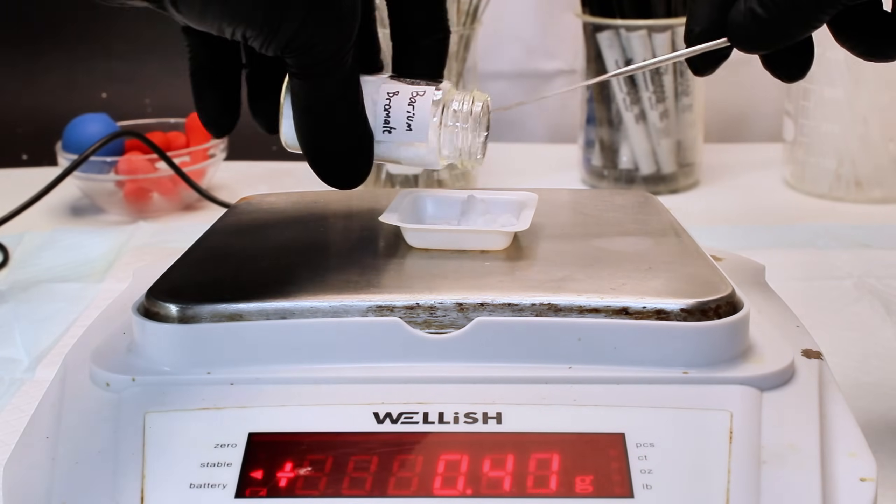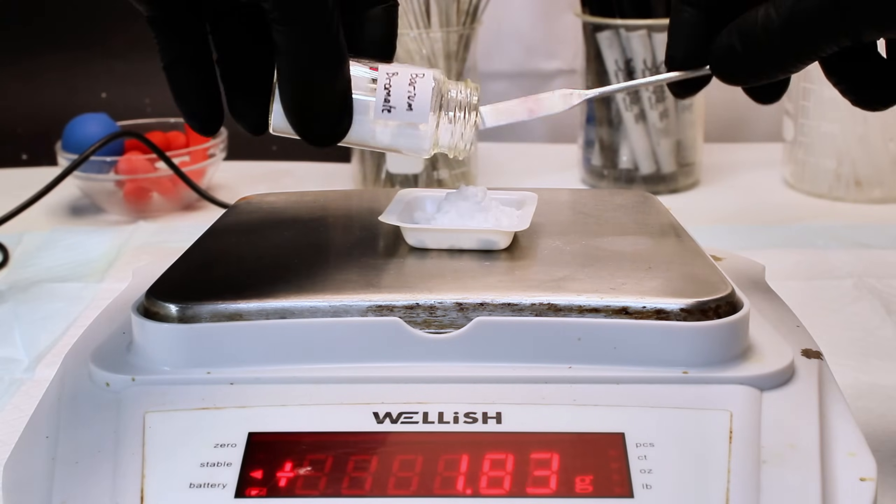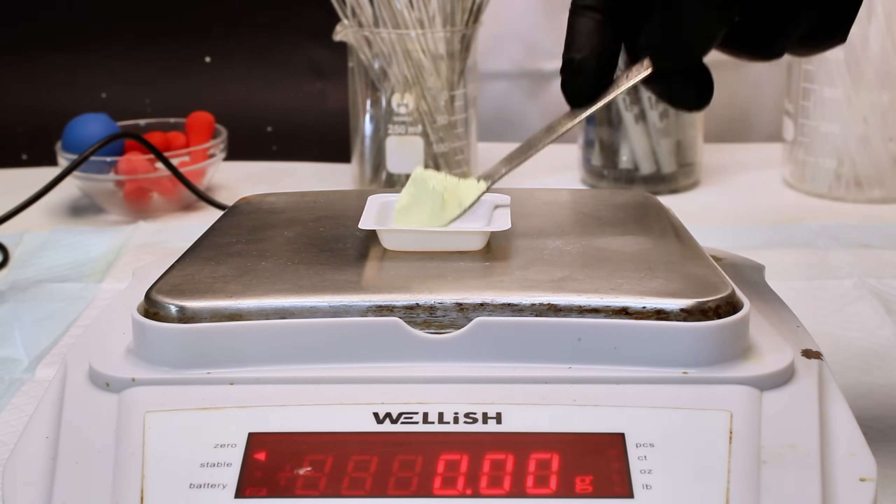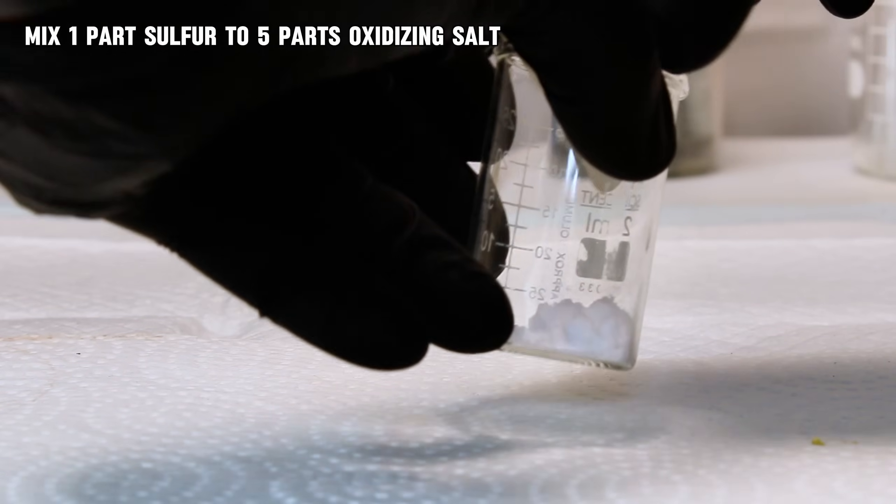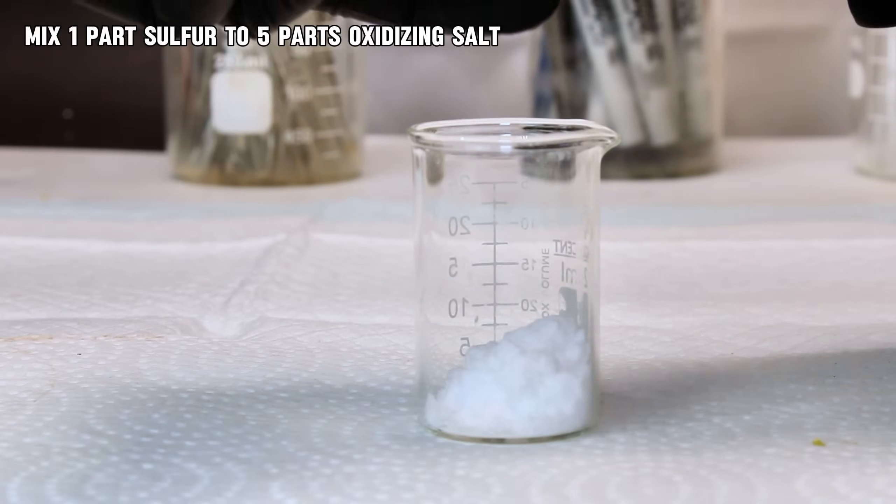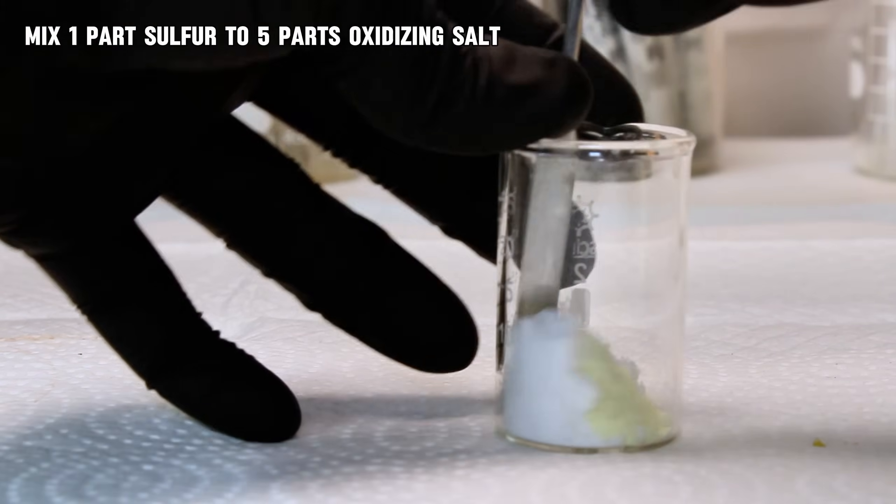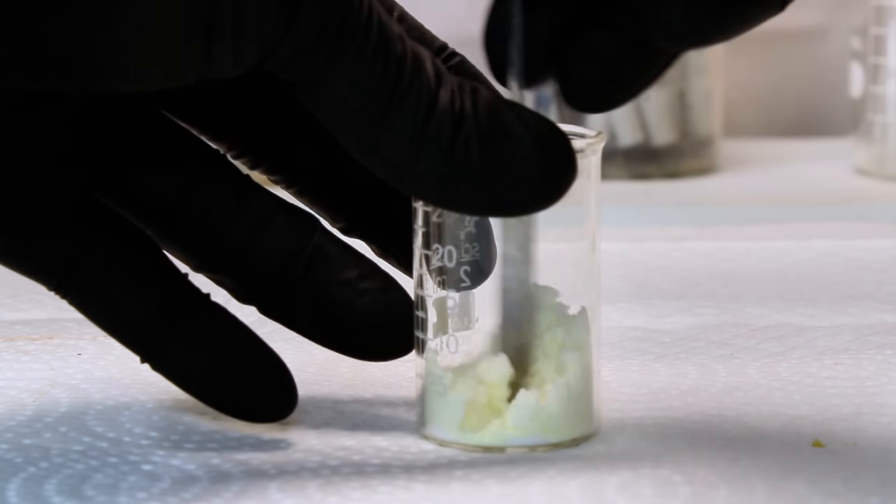Pyrotechnic fuels are pretty flexible and can honestly be anything capable of being oxidized. Fuels such as charcoal, aluminum, or iron can also provide color of their own, while sulfur only burns a faint blue. Since I want to try to isolate the color of my salts here, I decided to use sulfur as my fuel, which is simply mixed with my bromate salts in a 1 to 5 ratio. And yeah, that's pretty much it. I now had two binary pyrotechnic powders I was ready to try out.